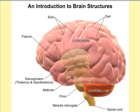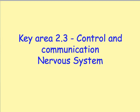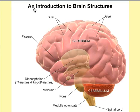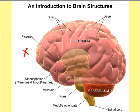Here we're looking at a brain from the side on. On this side here is where your eyes would be and your forehead, and here is the back of the head. So you're looking at one side of the brain. This largest structure of the brain here is called the cerebrum.